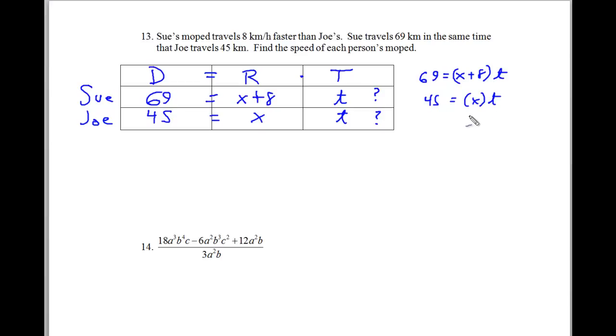Now to make this equation solvable, what we are going to do is we're going to get the t by itself. So in the first equation we're going to divide both sides by x plus 8, which gets the t alone. And here in the second equation, we're going to divide both sides by x, which gets the t alone.